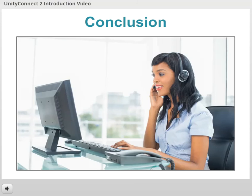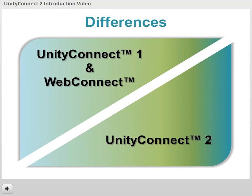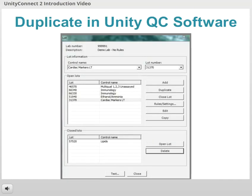Otherwise, you may stop the video now. For those of you who have used other Biorad Connectivity programs, let's check out a couple of key differences. First, please note that it's important for you to use the duplicate feature in your Unity QC software whenever you have a lot switch. Unity Connect 2 will not function correctly if you have not duplicated the old lot's setup to the new lot in the Unity QC software first.